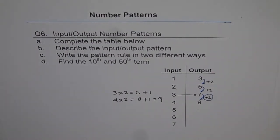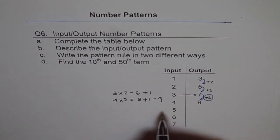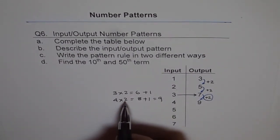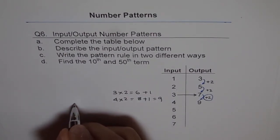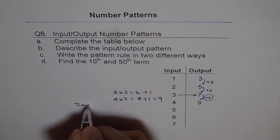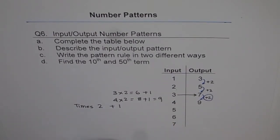So this works. So the formula, or to describe the input-output pattern is, whatever the number is, multiply by 2. Times 2 plus 1. Do you see? What are we doing? We are doing times 2 and then plus 1.